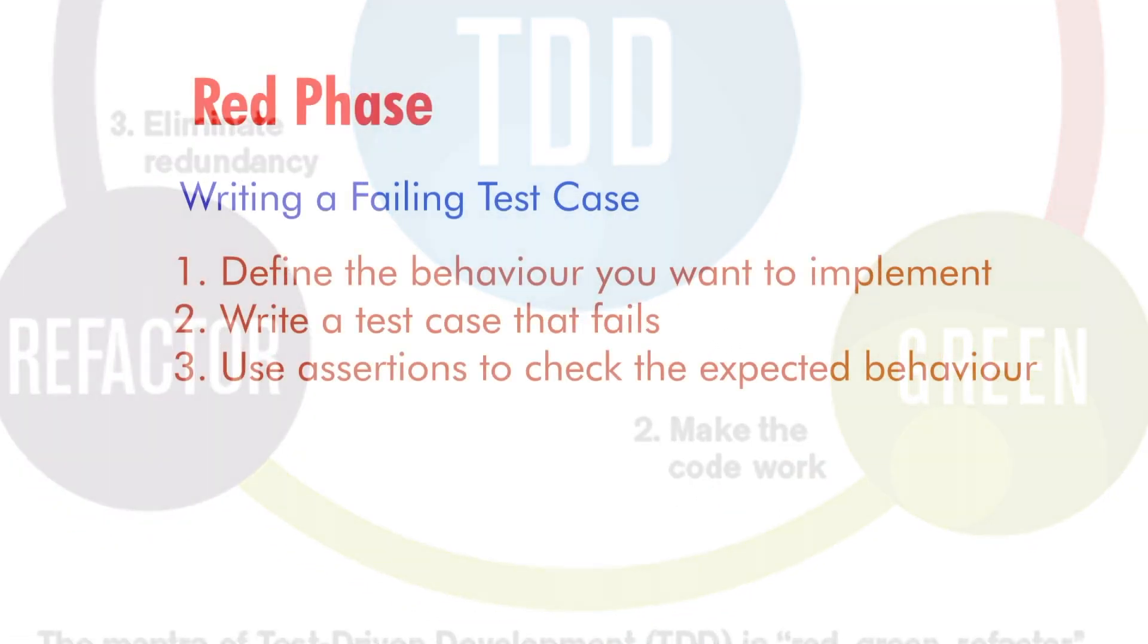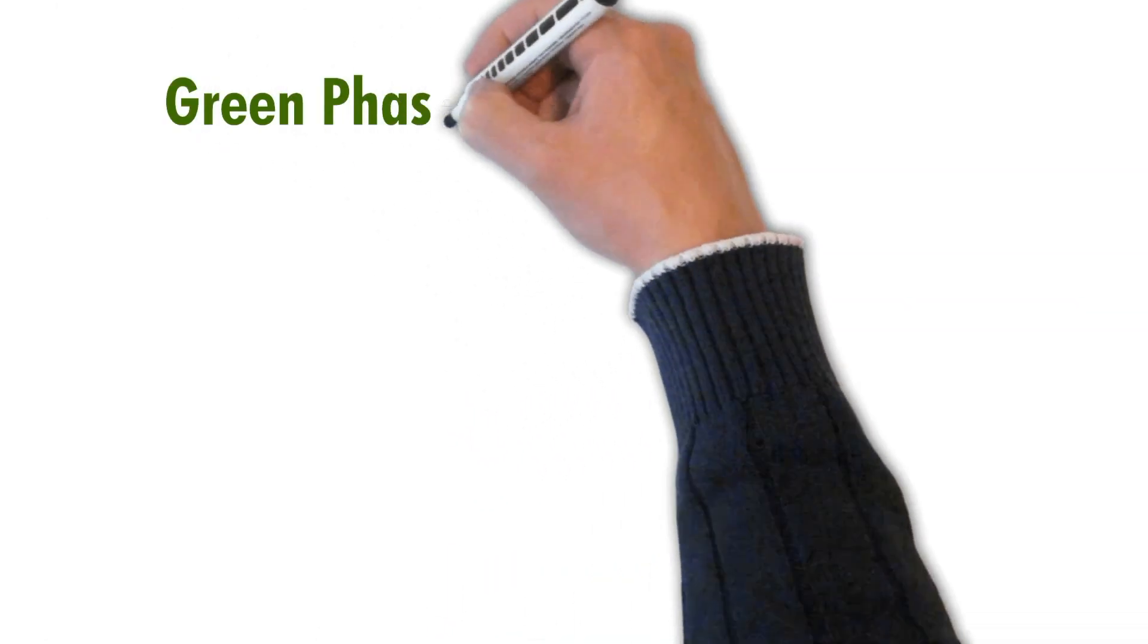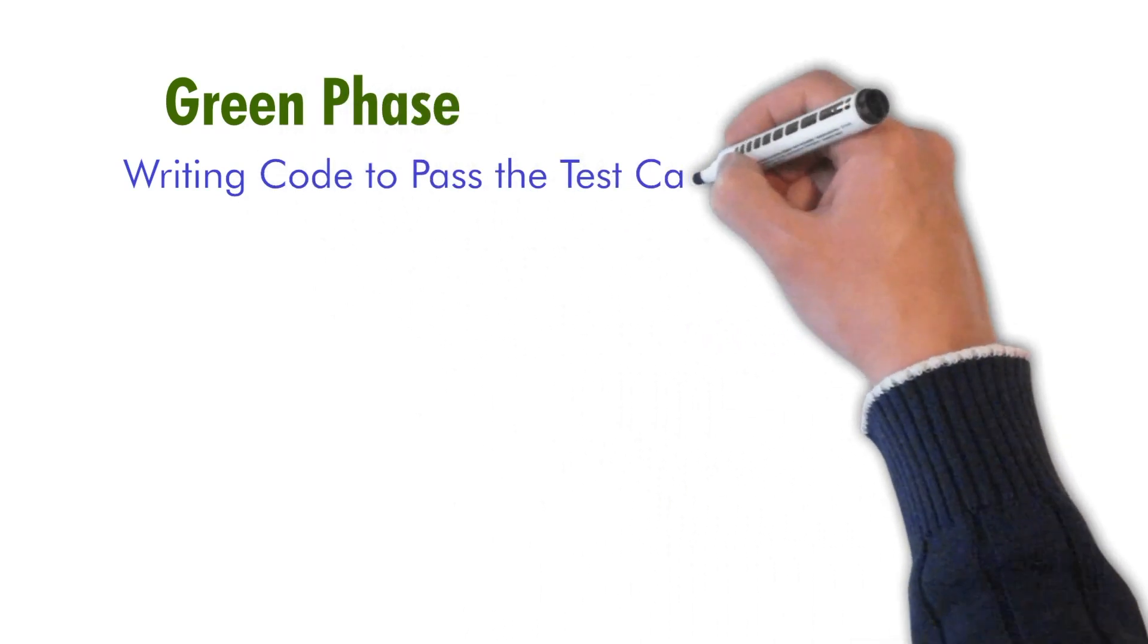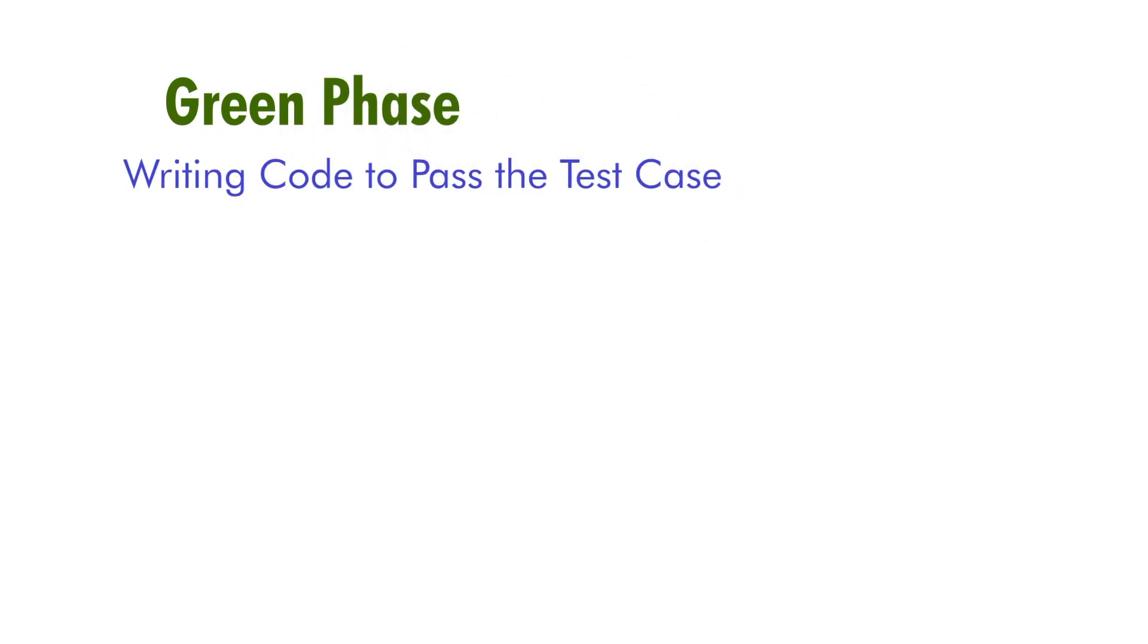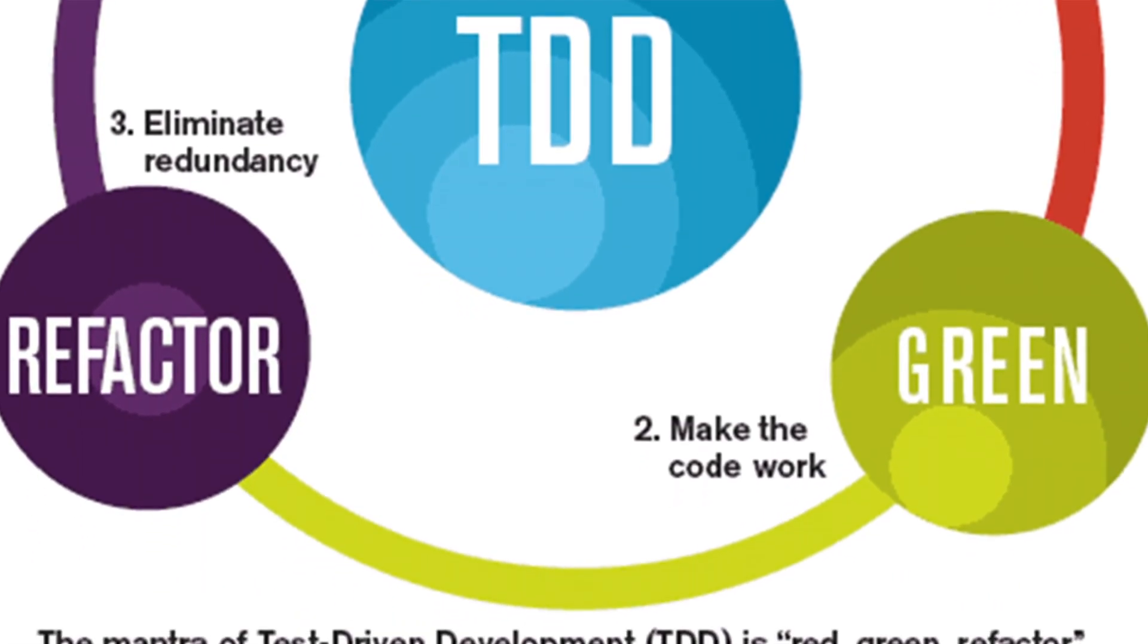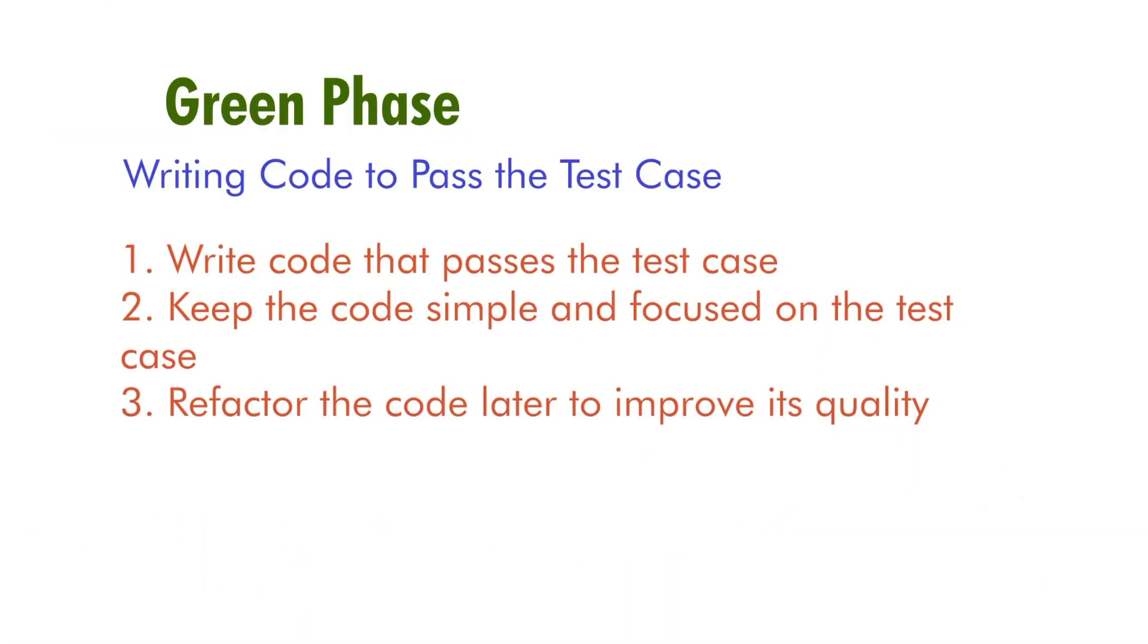The green phase is the second phase of the TDD cycle. In this phase, you write the code that passes the test case you defined in the red phase. The code should be simple and focused on passing the test case. You can refactor the code later to improve its quality.